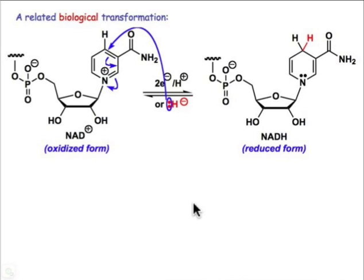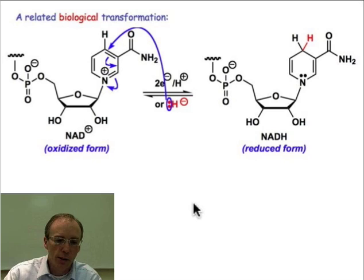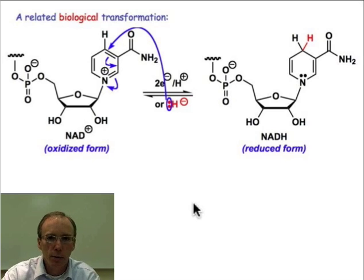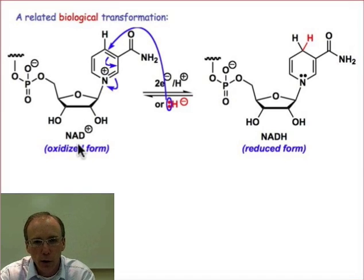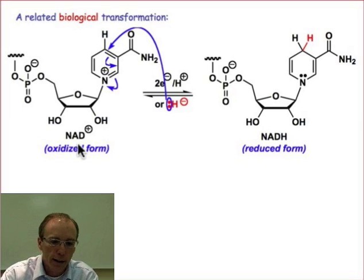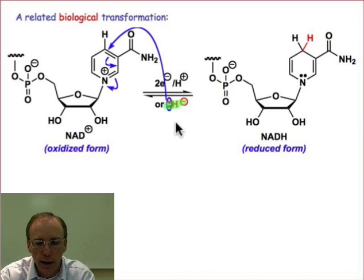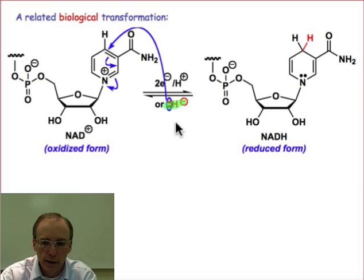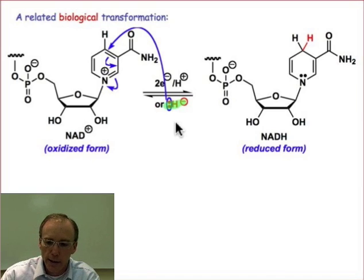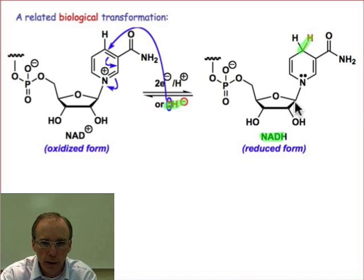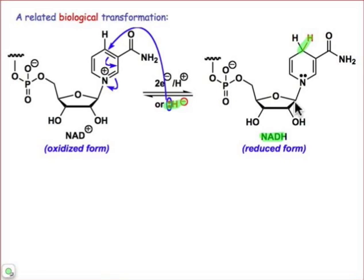We see this mode of reactivity in biological systems. NAD+, for example, undergoes nucleophilic attack at the 4 position with a nucleophilic source of hydride anion, and that generates the intermediate NADH — the reduced form — in which that nucleophile adds in to that heteroaromatic ring because of its mode of reactivity as an electrophile.